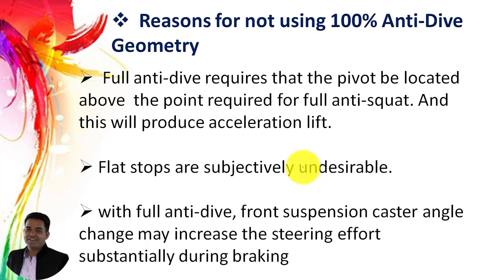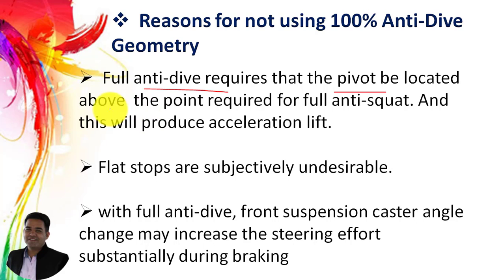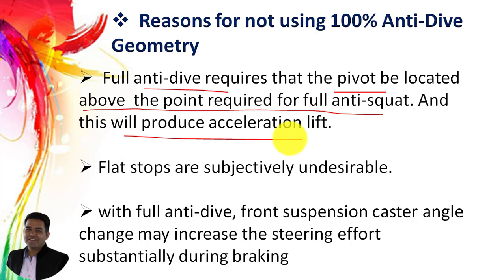The first reason for not using 100% anti-dive geometry: full anti-dive suspension geometry requires that the pivot be located above the point required for fully anti-squat suspension geometry. If we are planning to design the anti-dive suspension geometry, the pivot point for anti-dive will be slightly above the point required for anti-squat, and this will produce acceleration lift — which is again an undesirable effect.